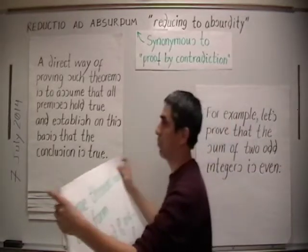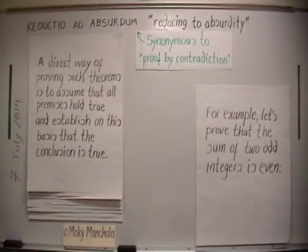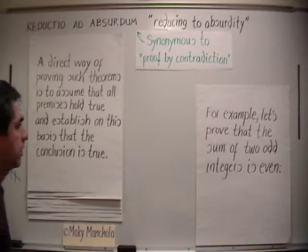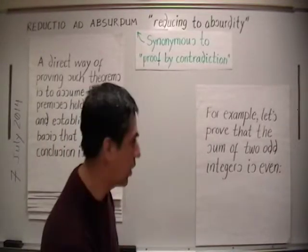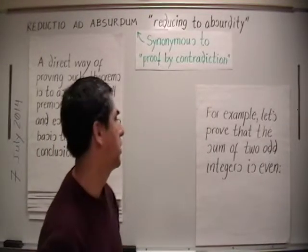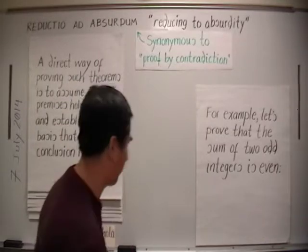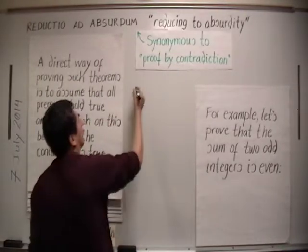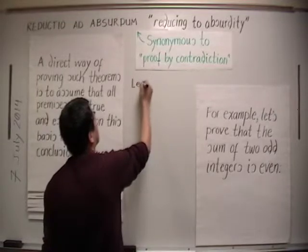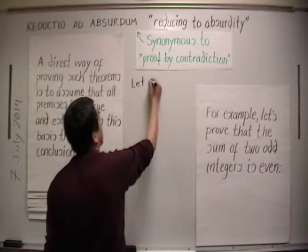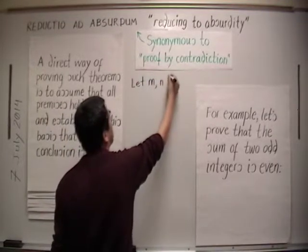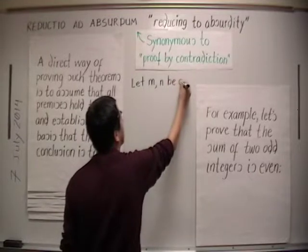For example, let's prove that the sum of two odd integers is even. Let m and n be odd integers.